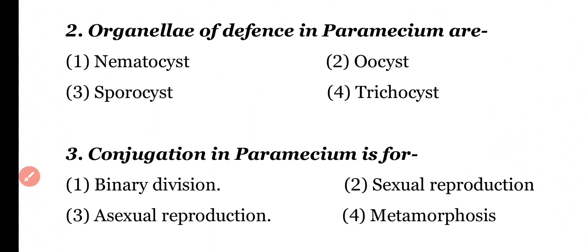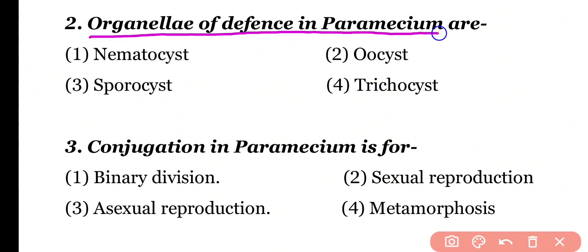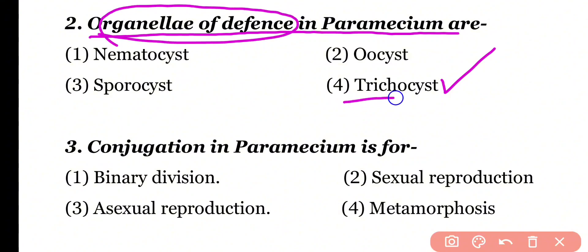Question number 2: The organelle of defense in Paramecium is — nematocyst, oocyst, sporocyst, or trichocyst? Correct answer is option 4. In Paramecium, the organelle of defense is trichocyst.